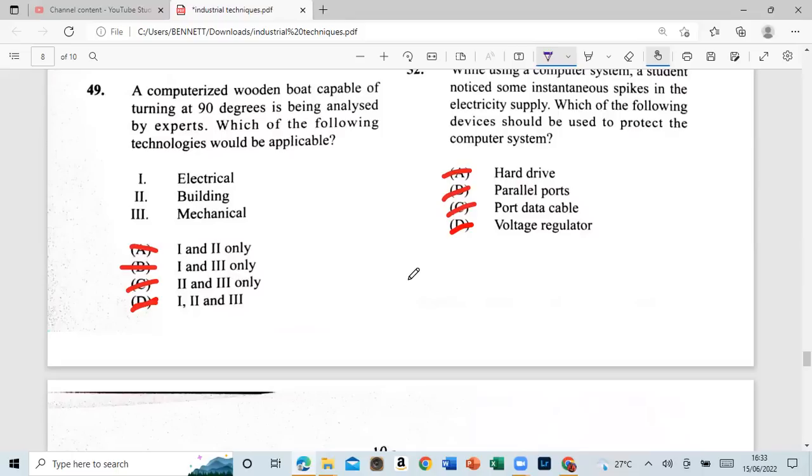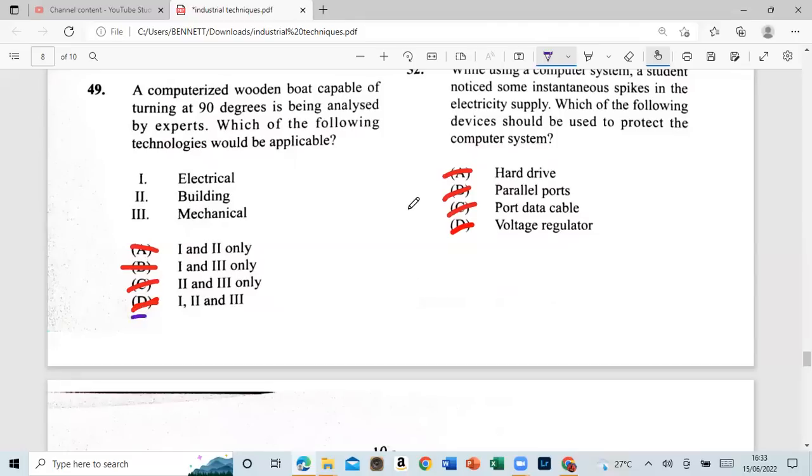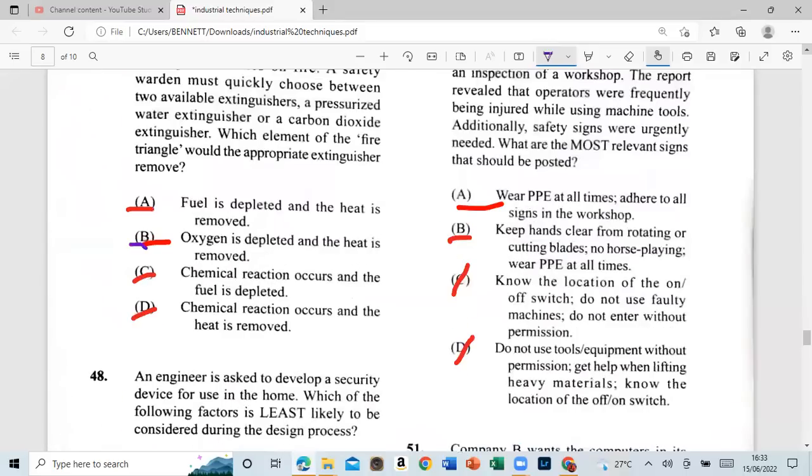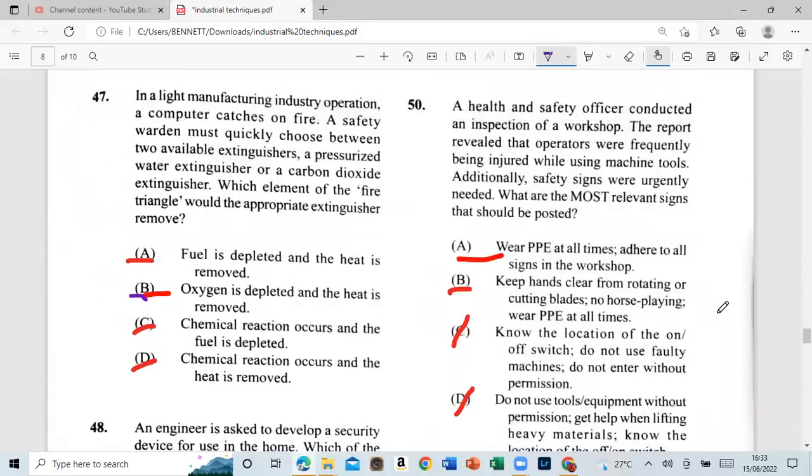A computerized wooden boat capable of turning at 90 degrees is being analyzed by the expert. Which of the following technologies would be affected? A: electrical, B: building, three: mechanical. And that is all. All right. So we're at 50. Light button, guys. We're going to make it to the end. Let's go. Let's go see. I'm not going to match up the exam. I'm going to do an exam. All right.